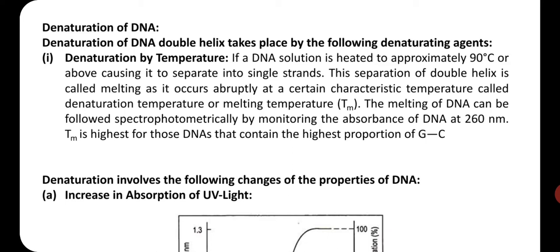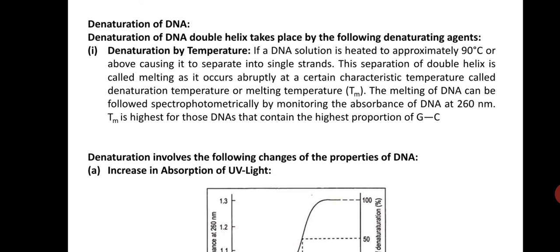How will you observe that denaturation has taken place? You can check the absorbance at 260 nanometers. 260 nanometers is the lambda max of DNA — the wavelength at which DNA absorbs UV light. Make sure that the melting temperature of DNA is high when the GC content is high.